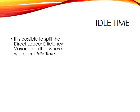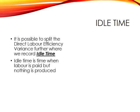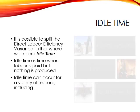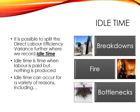It's possible to split the direct labour efficiency variance further, and this is where we record idle time. Idle time is when we're paying for labour but getting nothing in return. This can happen for a variety of reasons — it might be because we've had a breakdown, so staff are sat around being paid for doing nothing.